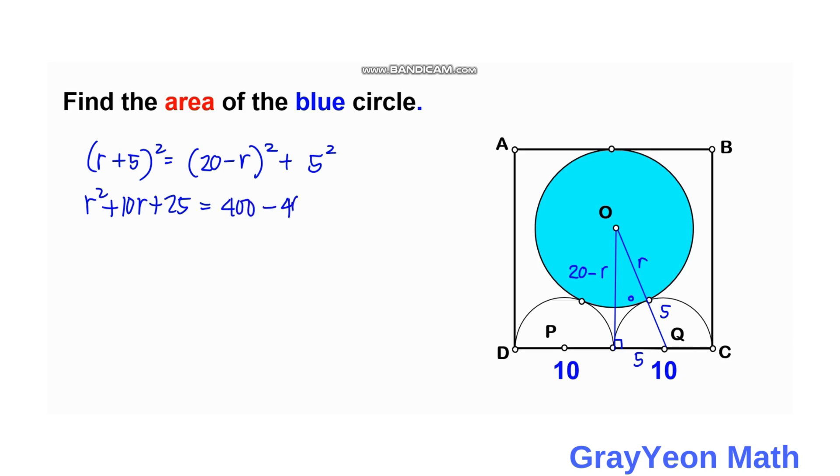minus 40R plus R squared plus 25. So we can cancel this 25 and this R squared.